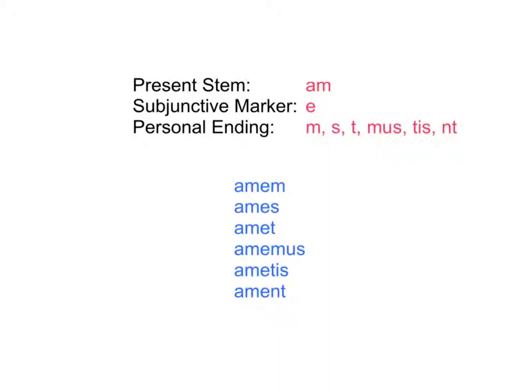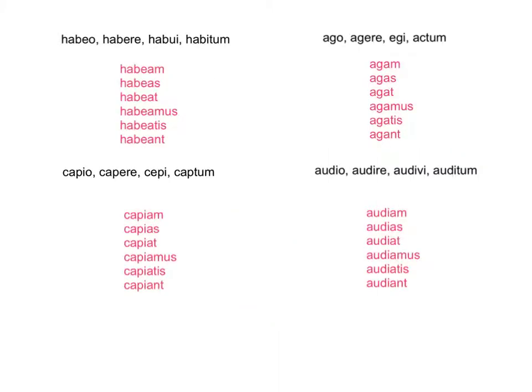Let's see what this looks like in some of the other conjugations. For second conjugation — to have — we have hab, and we need EA from 'we beat': EA. And then we're going to end with M, S, T, mus, tis, nt.